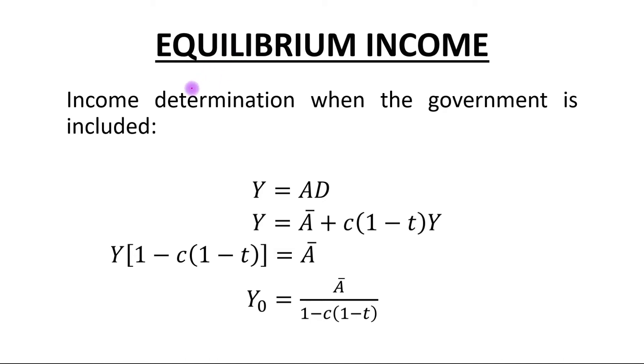Hello students, today's topic is equilibrium income, income determination when the government is included. Y equals AD. In the next step we will write Y equals autonomous spending plus MPC times income. You should note that this term represents MPC out of disposable income, however this whole term represents MPC out of income.